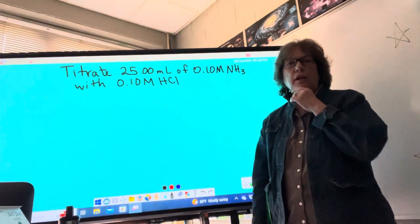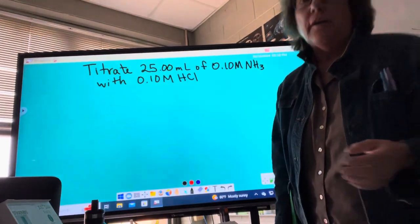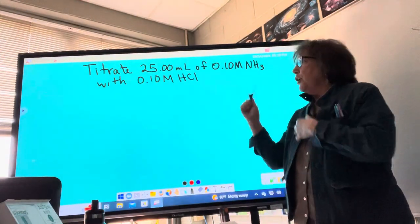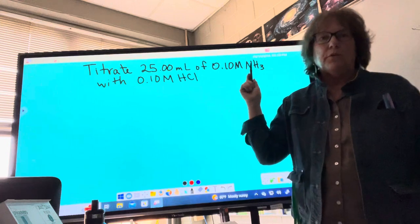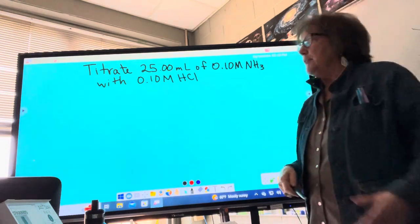Okay, so I'm going to do this video to help you see what we do on titrations. Today, we've talked about titrating 25 mL of tenth molar ammonia with tenth molar hydrochloric acid.